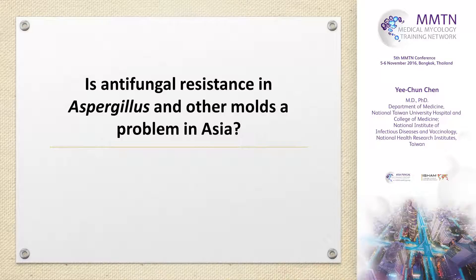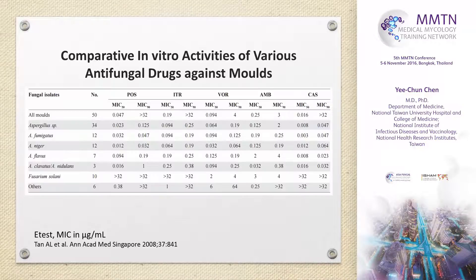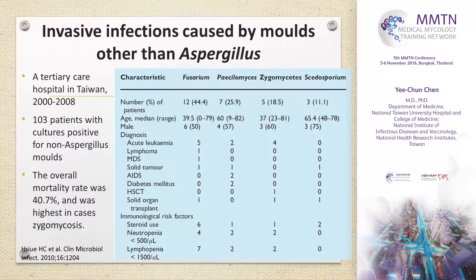The second part is resistance in Aspergillus and other molds — a problem in Asia. Taking this simple message to compare Aspergillus and others, for example Fusarium: for Aspergillus flavus, amphotericin B has been the drug of choice for the past 40 years; however, the MIC is relatively high for Aspergillus flavus. For Fusarium, the MIC for every antifungal is relatively high — higher than for Aspergillus. Fusarium is very important and, according to Taiwan's study, is the number one mold other than Aspergillus for invasive fungal mold disease.